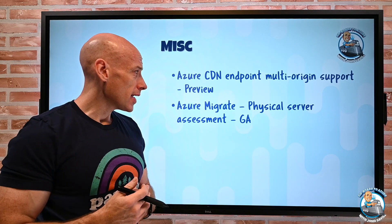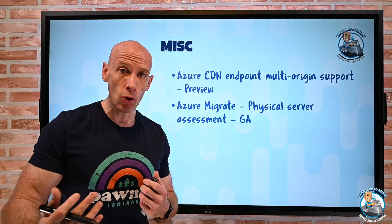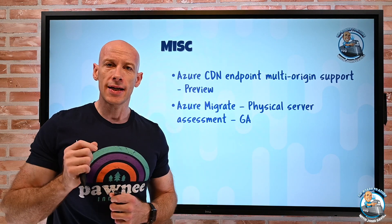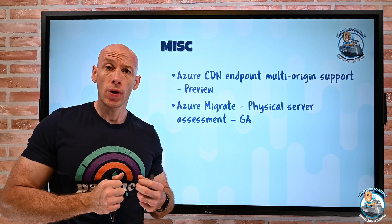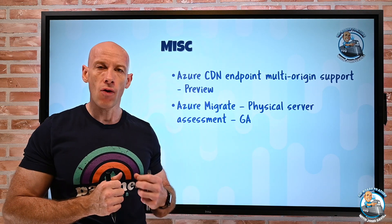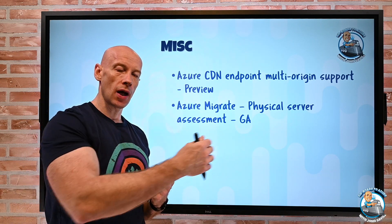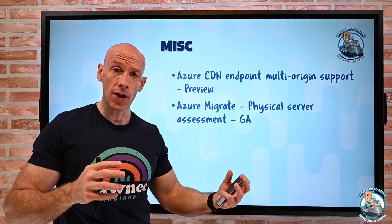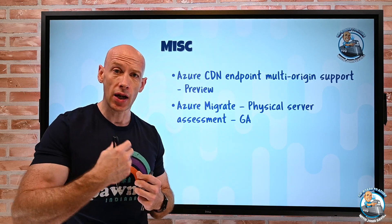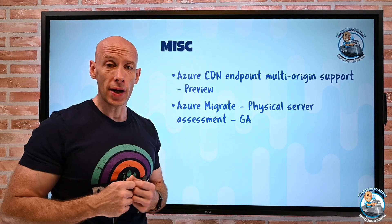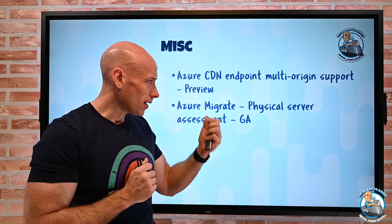Azure Migrate is now GA, so generally available, the physical server assessment. So ordinarily, Azure Migrate would work through the hypervisor, be it VMware or Hyper-V. It would talk to the hypervisor, discover virtual machines, and then discover performance characteristics. So it can advise on, are they suitable for migration?